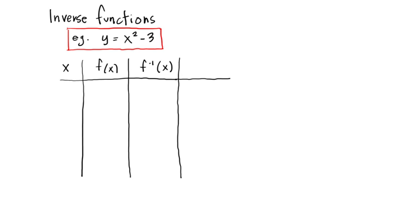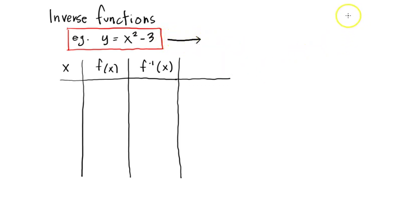Most of you should already know what that is. I'm simply taking a function — in this case I'm going to look at the example of y equals x squared minus 3, a fairly simple quadratic. And if I'm going to change this to an inverse, the important thing to know right off the bat is that most of the time — not all the time, but most of the time — what you end up with when you do an inverse of this function is something that's not a function at all.